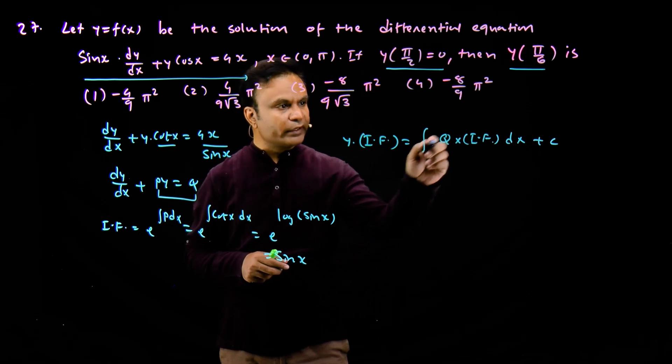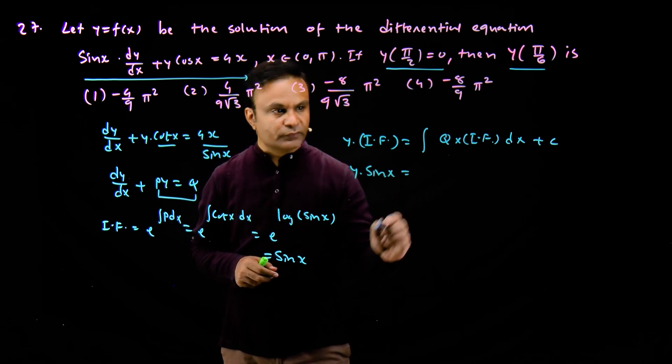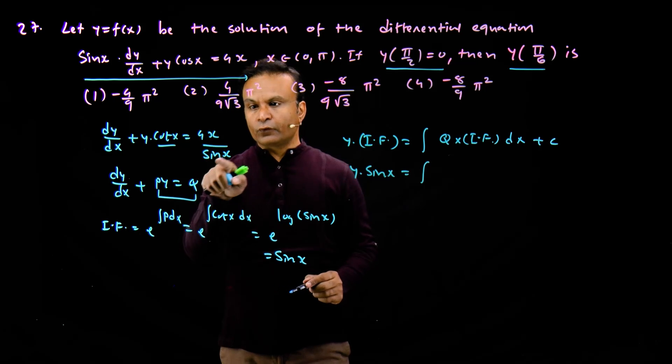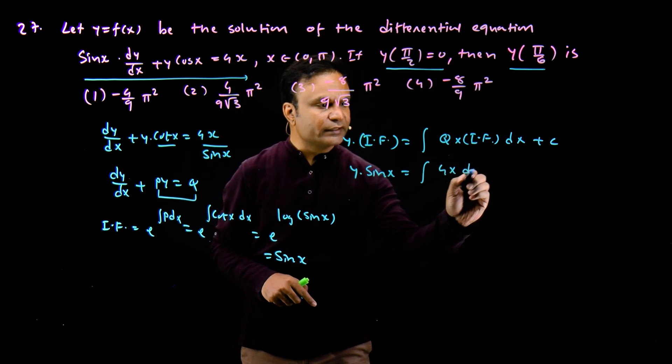We put the values of q and integrating factor here: y multiply by sin x is equal to 4x upon sin x multiply by sin x, so this becomes 4x.